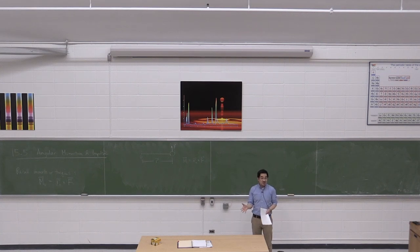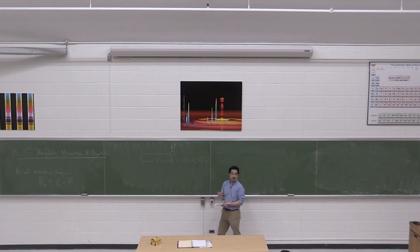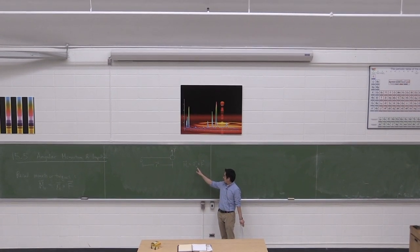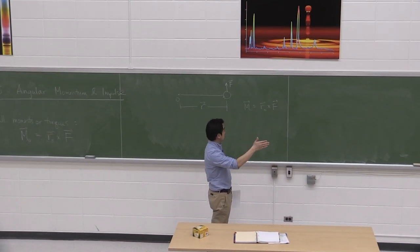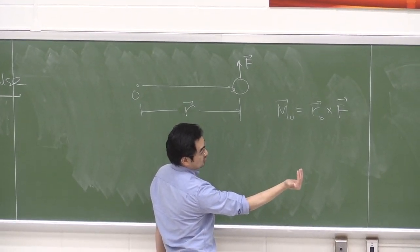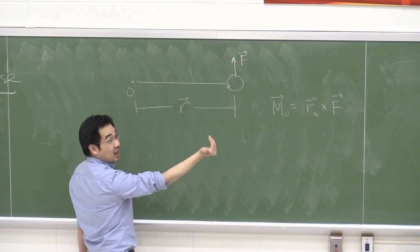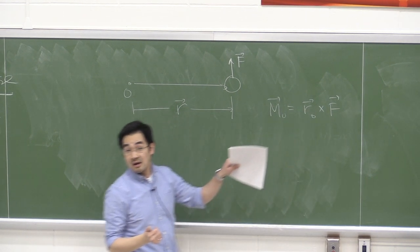For the first time in this course, I'm introducing the cross product. If you recall from your linear algebra course, you've dealt with dot product and cross product. Cross product uses the right-hand rule: point your fingers in the direction of the first vector, curl them toward the second vector, and your thumb points in the direction of the moment.